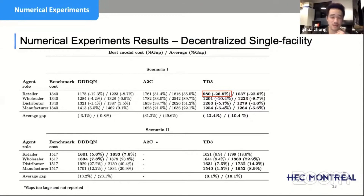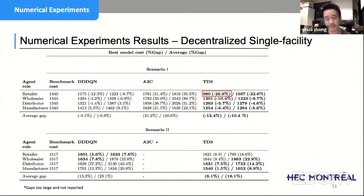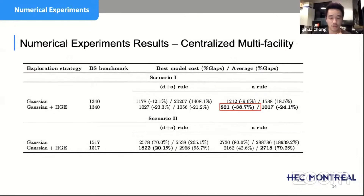For the centralized case controlling all facilities simultaneously, DDDQN and A2C find the problem too large — it is infeasible for them. Only TD3 is feasible. We also compared TD3 with and without heuristic-guided exploration (HGE). With HGE the cost savings are more significant — the best achieved is more than 38%, better than the benchmark and better than controlling only one facility.